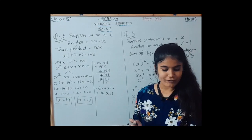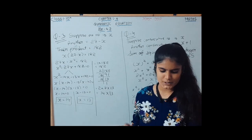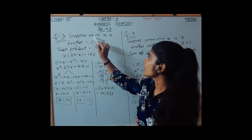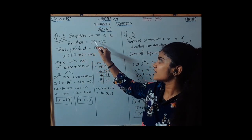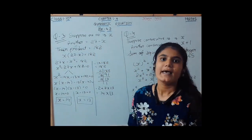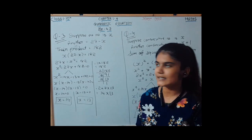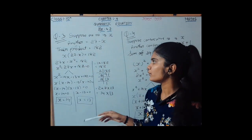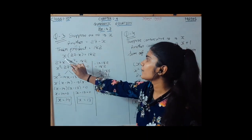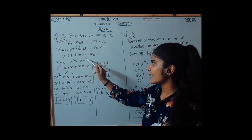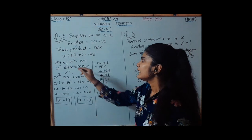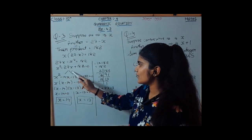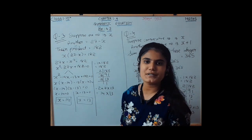Question number 3: find two numbers whose sum is 27 and product is 182. Suppose one number is x and the other is 27 minus x, since their sum is 27. Their product gives x into 27 minus x equals 182, which on equating gives the quadratic equation x squared minus 27x plus 182 equals 0.